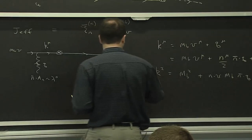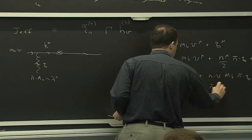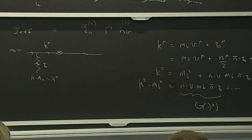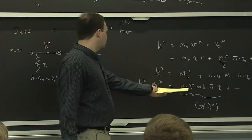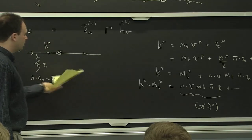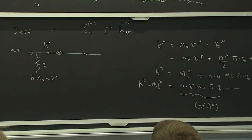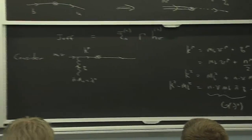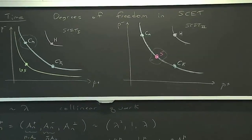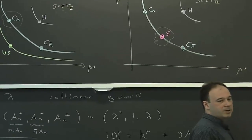So if I look at k squared minus M_B squared, that's n dot v times M_B times n-bar dot q. This is order lambda to the zero, since the momentum n-bar dot q is order lambda to the zero. So there's no suppression in the propagator — this propagator is off-shell by a hard amount. These scales are hard, and going back to my picture, that means they're up in the purple region. So this propagator is something we have to integrate out.